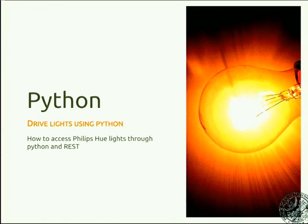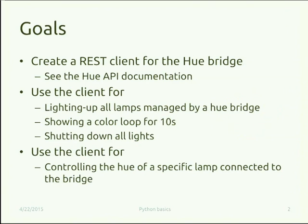The idea is to first create a REST client for interacting with the lamp, and then to write two different scripts. One just for checking that the REST communication works, which basically asks all the lamps connected to the Hue bridge to start a colored loop sequence and keep it on for 20 seconds. This is our first app. The second will be a seminal implementation of a bridge API in Python, with which we try to get access to control the hue color of the lamp.